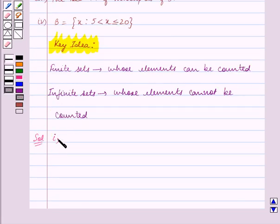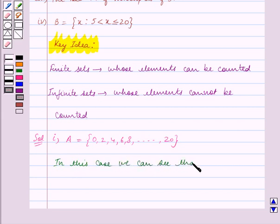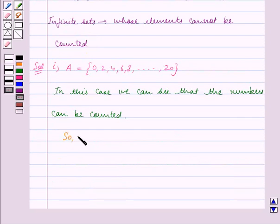The first part is set A which is equal to set containing 0, 2, 4, 6, 8 and so on till 20. Now, in this case, we can see that the numbers can be counted. So, the set A is a finite set.